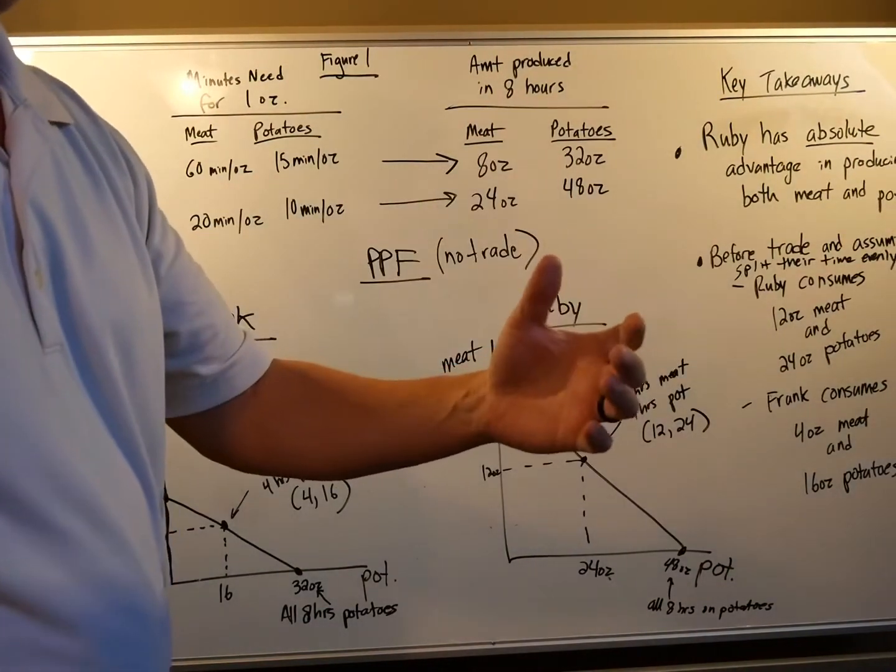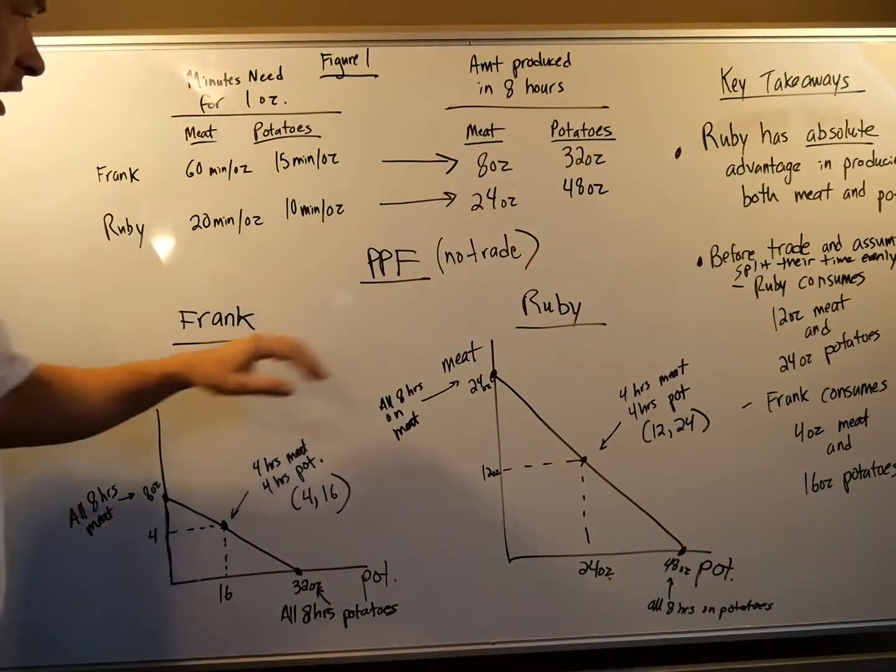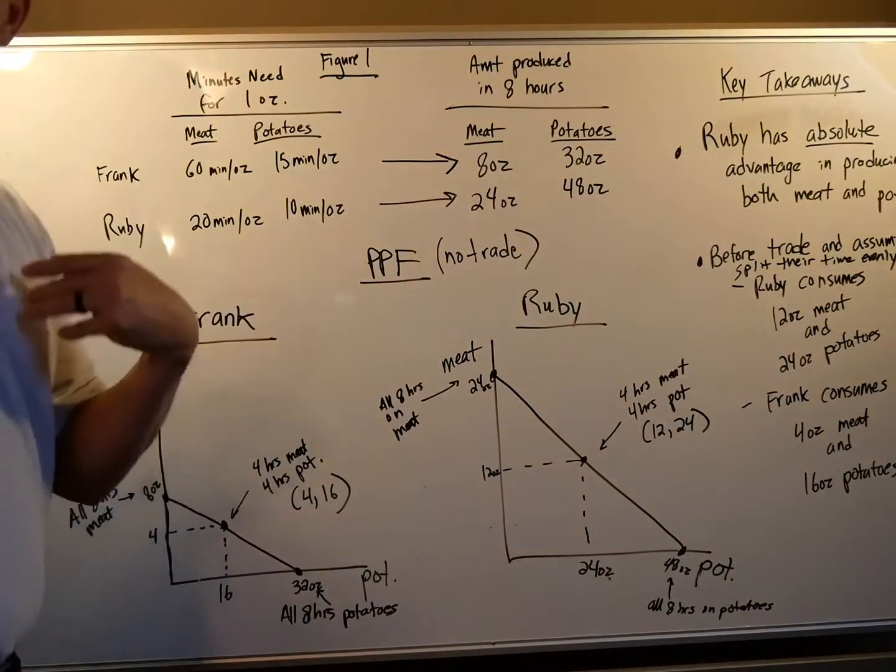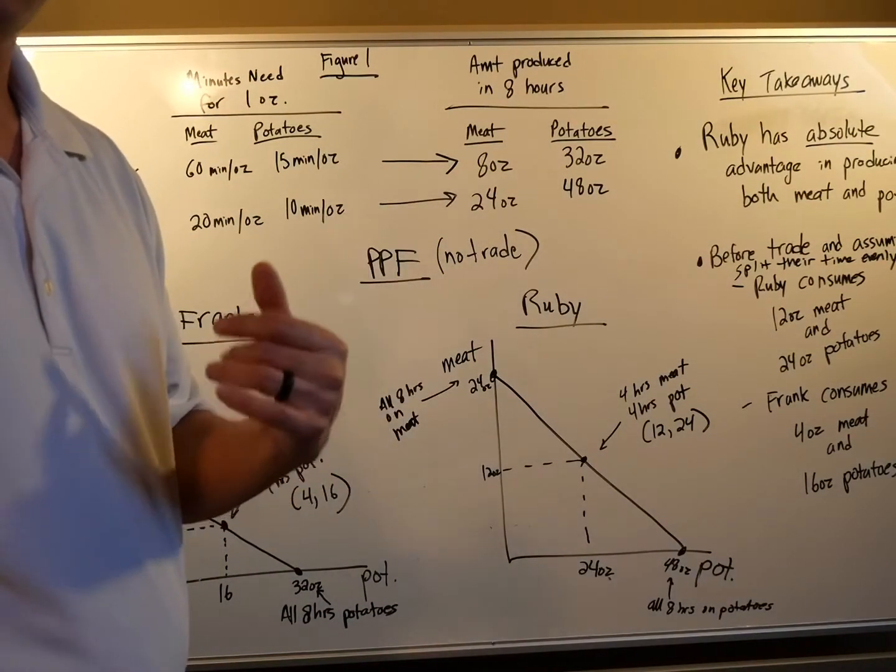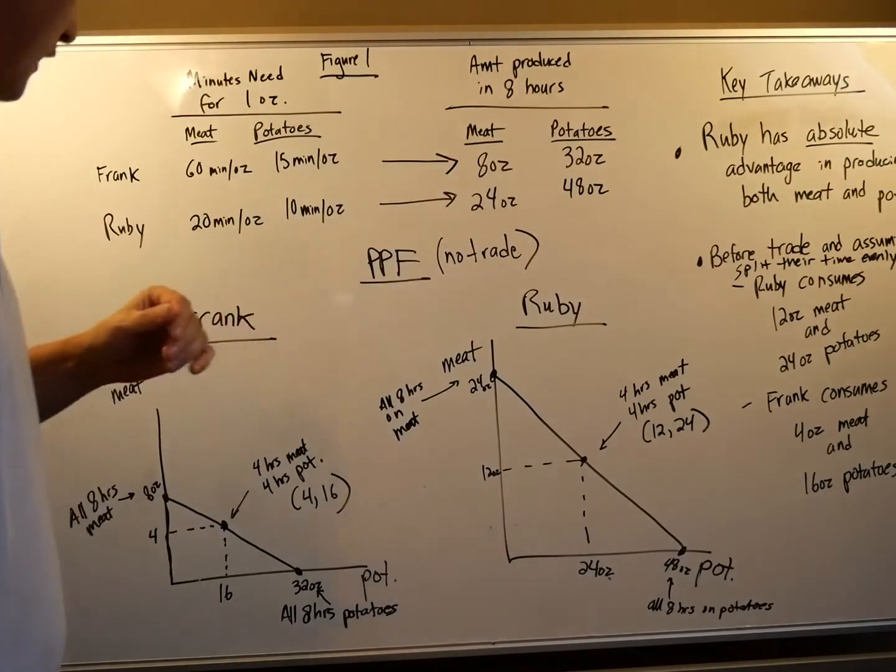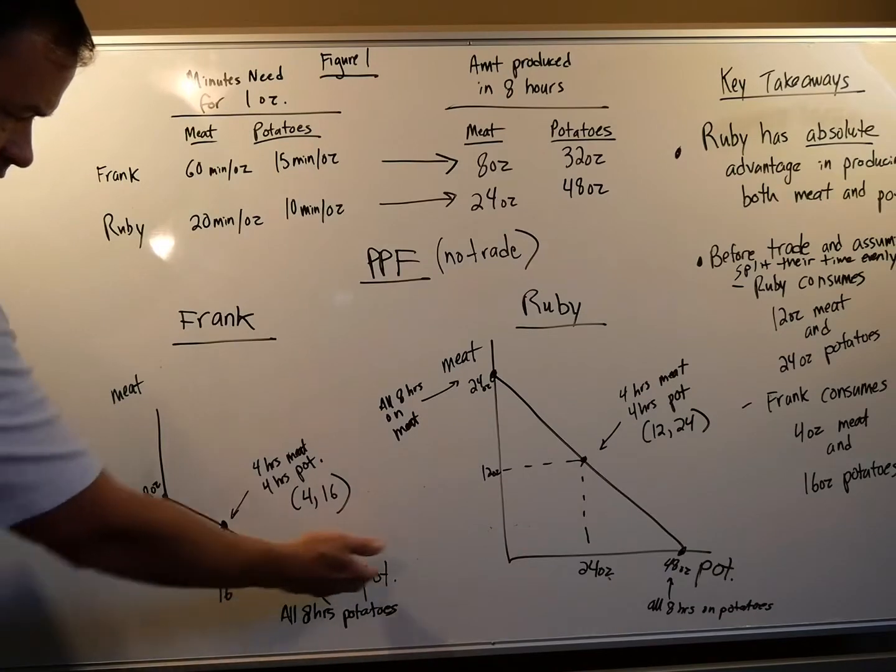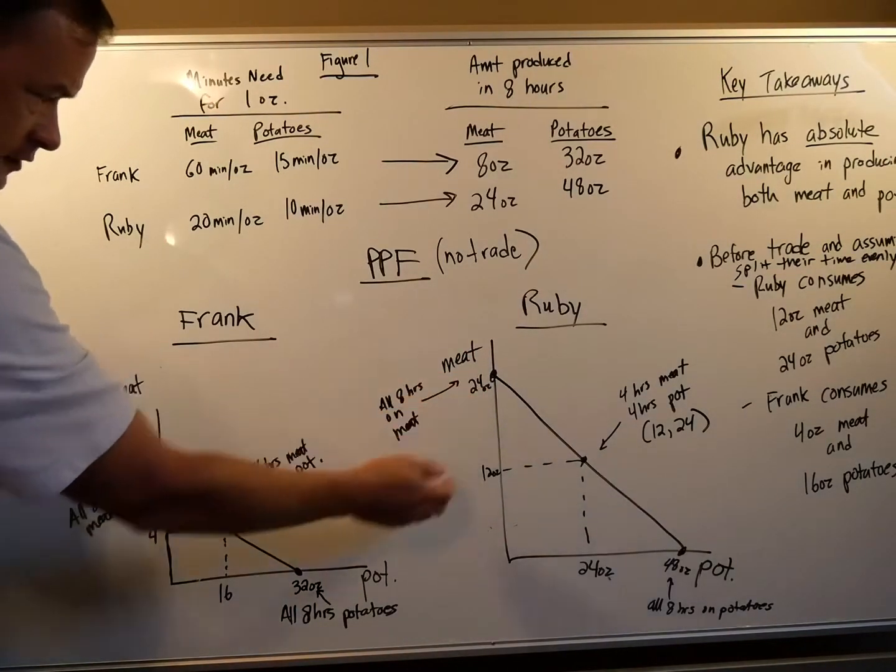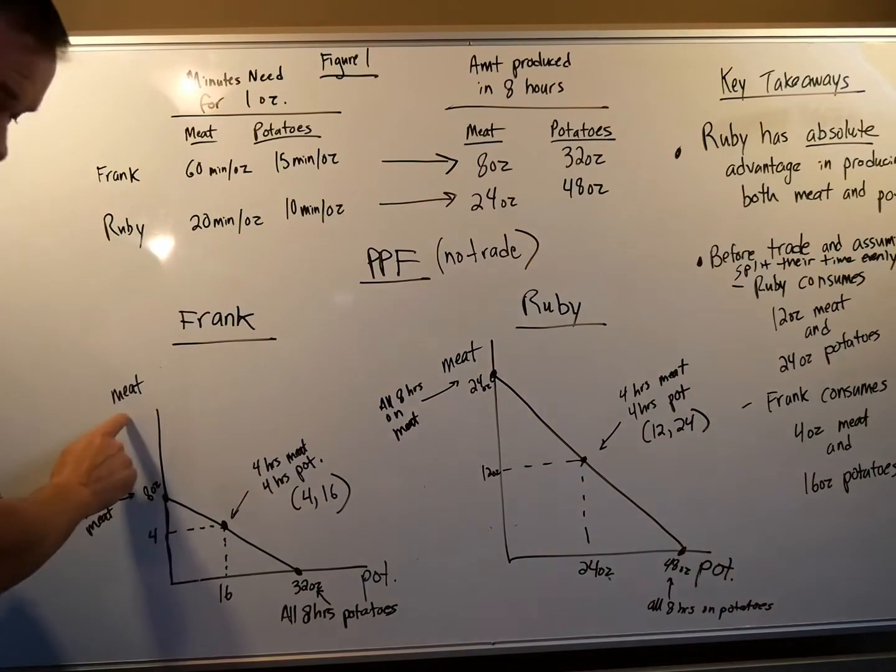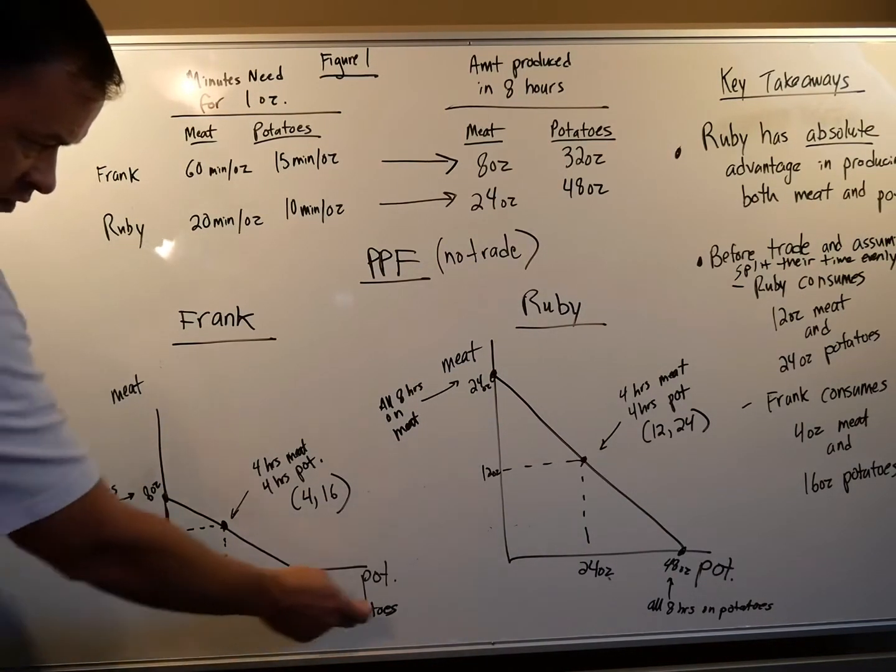We've got Frank and Ruby in our PPFs. Remember, production possibilities frontier. We cover that last class in chapter two. It's our production possibilities frontier. We have a vertical axis and a horizontal axis. And both of these are the same. We have meat on the vertical axis. So down here is no meat. Up here is a lot more meat. Over here to the left, that's zero potatoes. Over here is a lot of potatoes.